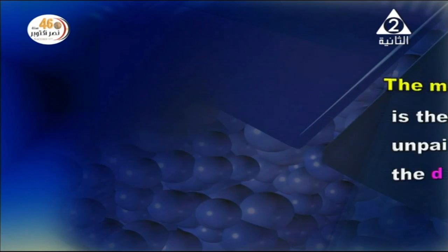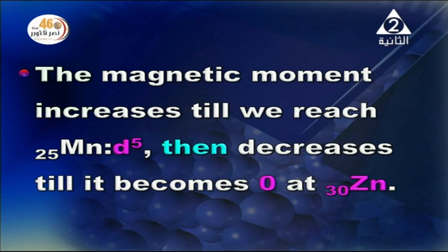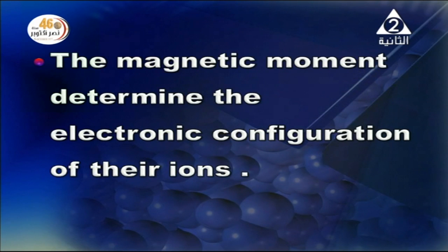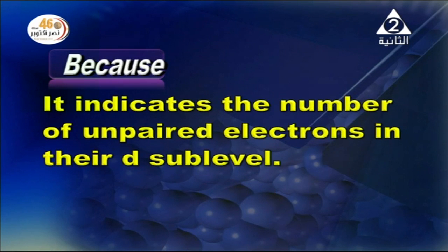The magnetic moment depends on the number of unpaired electrons in the D sub-level. The magnetic moment increases until we reach manganese (atomic number 25), which has five unpaired electrons according to Hund's rule, then decreases until it becomes zero at zinc (atomic number 30), which has no unpaired electrons. The magnetic moment helps determine the electronic configuration of their ions, as it indicates the number of unpaired electrons in the D sub-level.